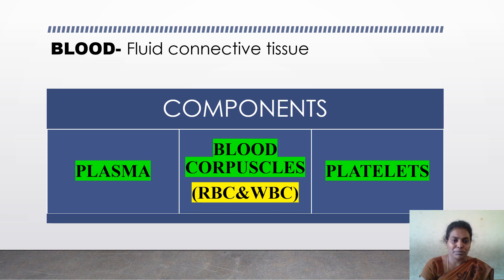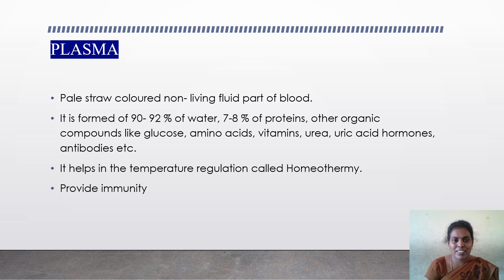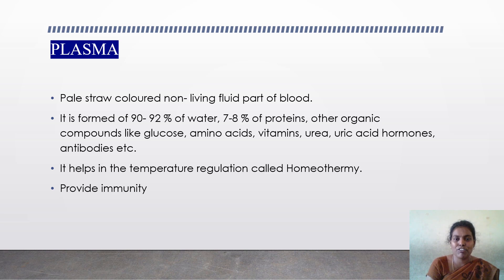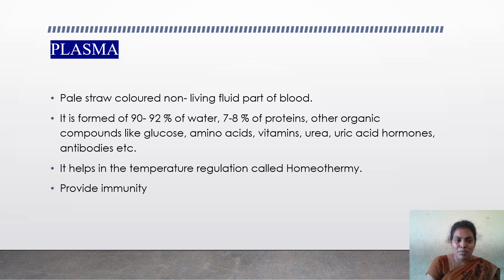The first component is plasma. Plasma is the liquid part of blood — it gives blood its liquid state. It is pale straw colored, meaning light yellowish in color. It is non-living and is the fluid part of the blood. Plasma is formed of 90 to 92% water and 7 to 8% proteins and other organic compounds like glucose, amino acids, vitamins, urea, uric acid, hormones, and antibodies.